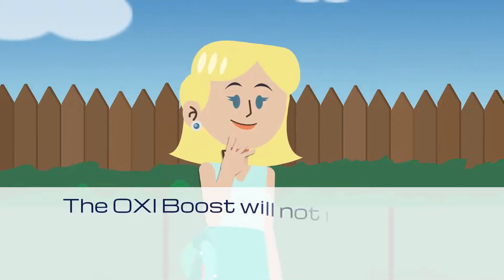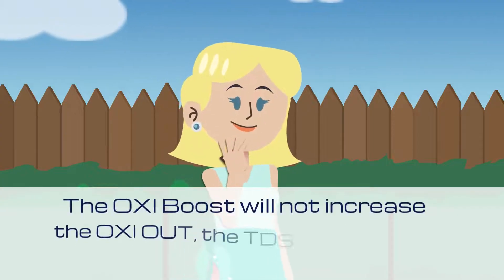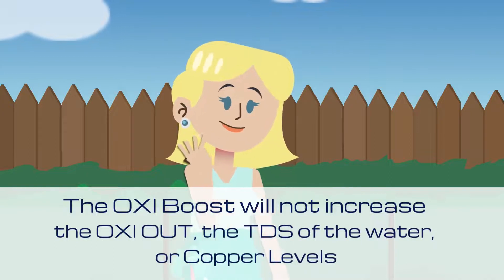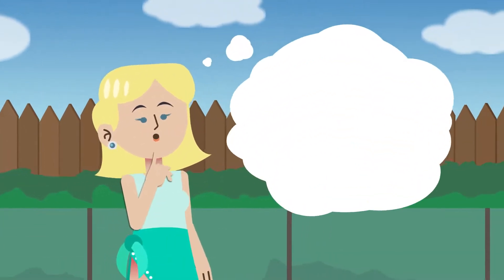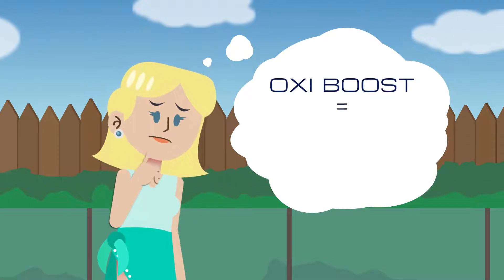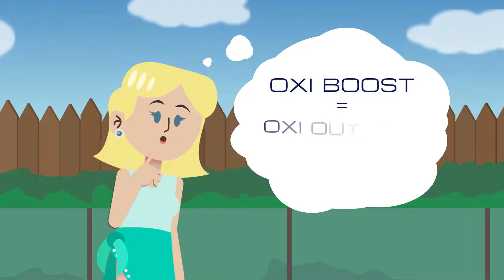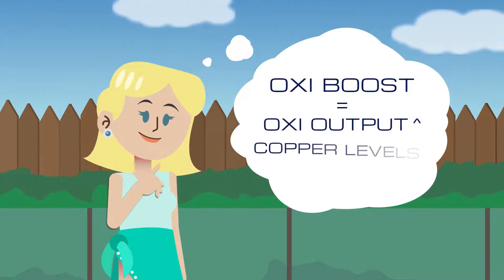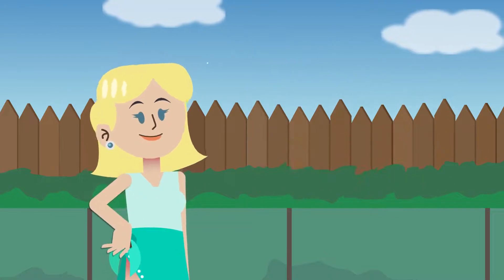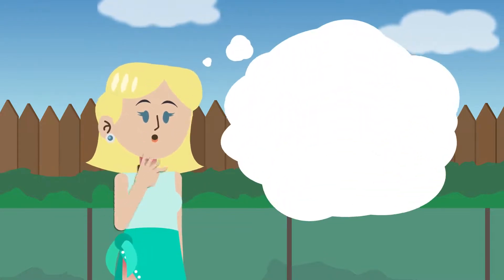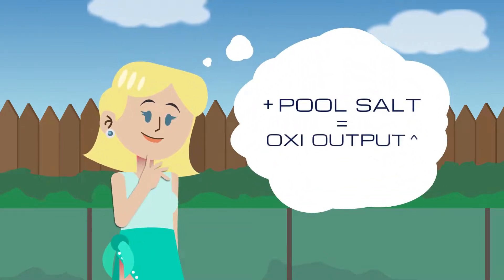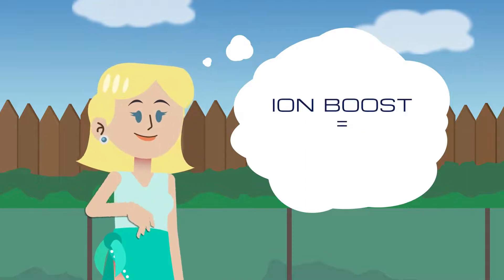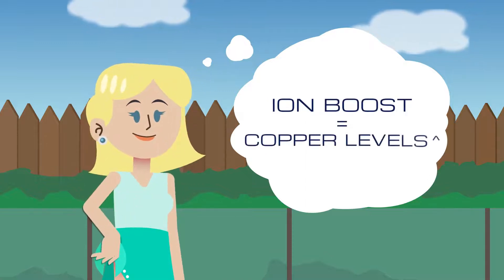The oxy boost will not help increase your copper level — that's what the ion boost is for. A common misunderstanding is that the oxy boost will also increase oxy output or increase copper levels, which is not the case. Only adding salt to the pool will increase the oxy output, and the ion boost button is for increasing copper levels.